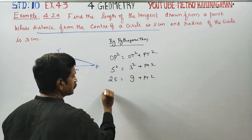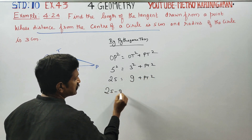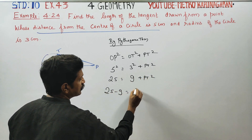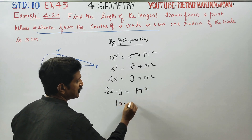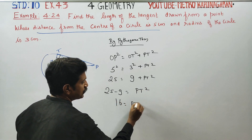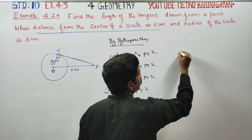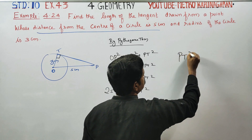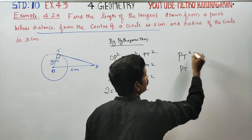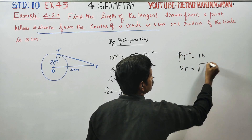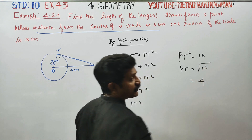By Pythagoras theorem: PT² = OT² − r² = 25 − 9 = 16. Therefore PT² = 16, so PT = √16 = 4.